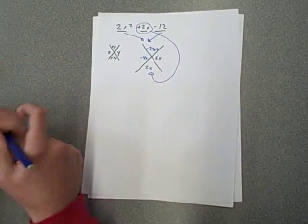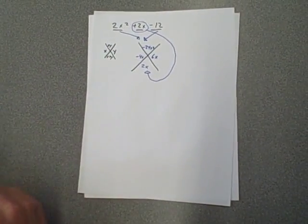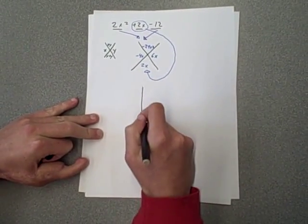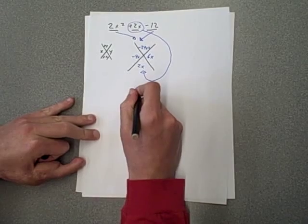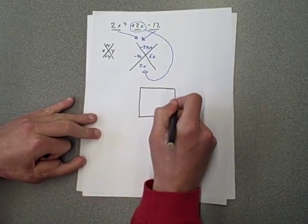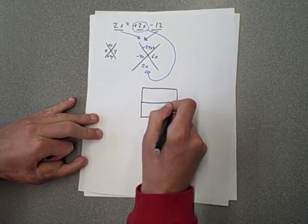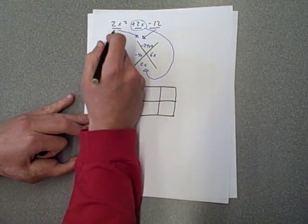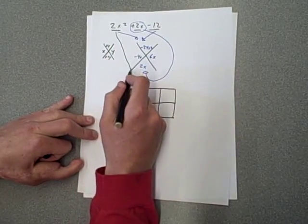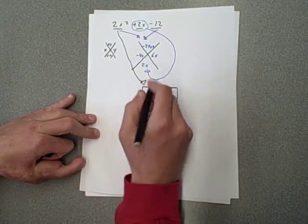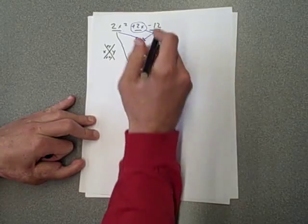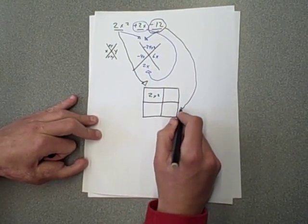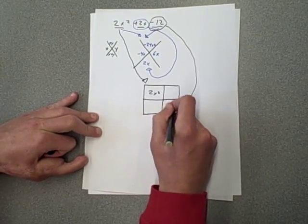So now we can use that information to go to the x-box, which we're going to use to do our eventual factoring. So in the x-box, we put the original value up in the upper corner. And we get 2x squared here. And in this corner, we put the negative 12, which goes in this corner.